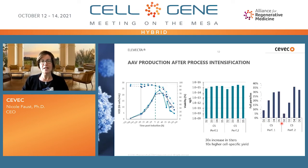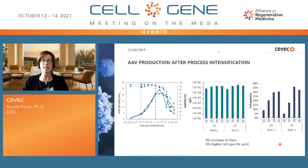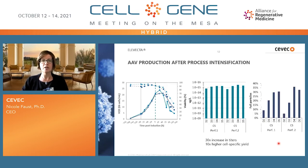We're quite happy with the platform, and we keep optimizing both the process and cell development. The other thing we've done is duplicate the platform in HEK293 cells. We started with our CAP cells, which we knew to be good adenoviral vector producers, but we receive a lot of requests for generating Elevecta cells on a HEK293 background — so that's what we started implementing.